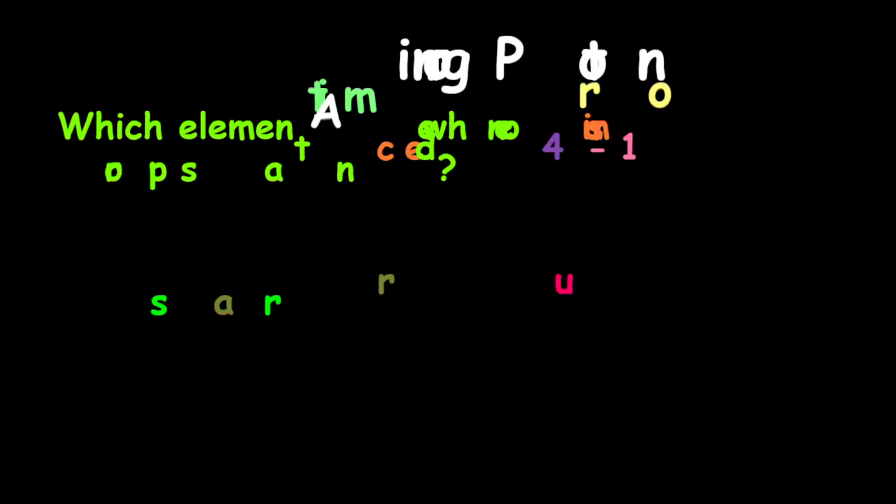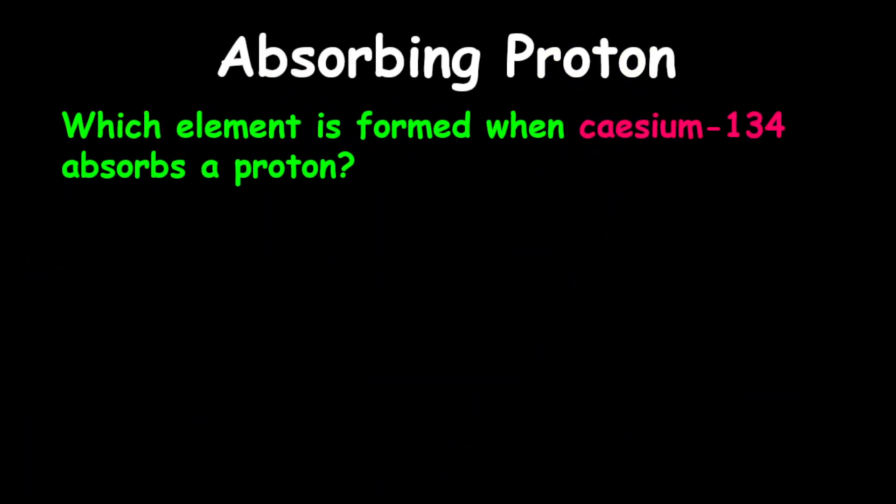For our final example, we are looking at the absorption of a proton. The question reads, which element is formed when caesium-134 absorbs a proton? So caesium has a proton number of 55.